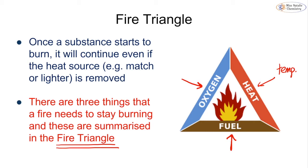If we remove any part of the fire triangle, the fire goes out. For example: if we use up all the fuel, the fire stops; if we take away the oxygen — like putting a lid on a candle — it stops; if we cool it down by putting water or a fire extinguisher on it, the fire stops. We need all three things — fuel, oxygen, and temperature — for the fire to keep going.